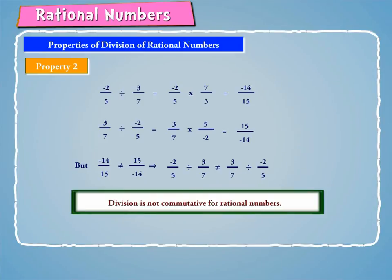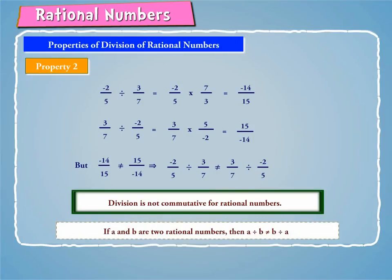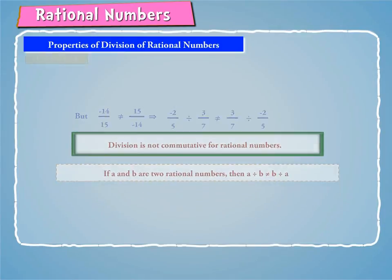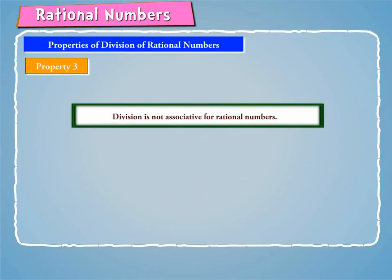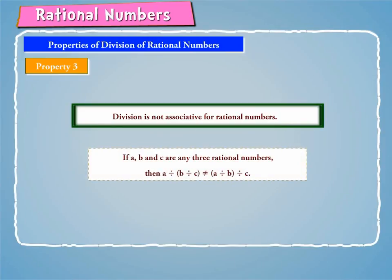Hence, division is not commutative for rational numbers. Thus, if A and B are two rational numbers, then A divided by B is not equal to B divided by A. Similarly, division is not associative for rational numbers. Thus, if A, B and C are any three rational numbers, then A divided by (B divided by C) is not equal to (A divided by B) divided by C.